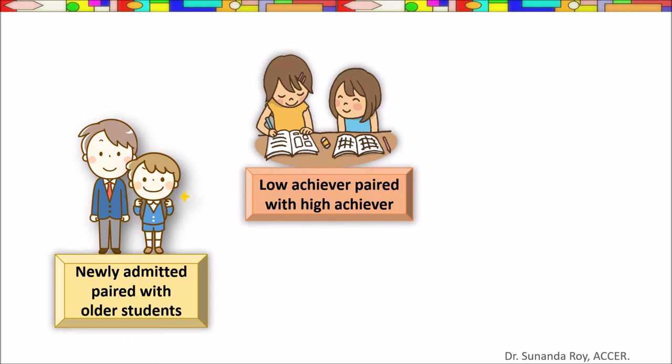Low-achieving elementary school students can be paired with high-achieving elementary school students. Low-achievers are students who are unable to reach their optimal potential while attaining their goals. The high-achievers here act as a role model and help low-achievers improve their study habits.